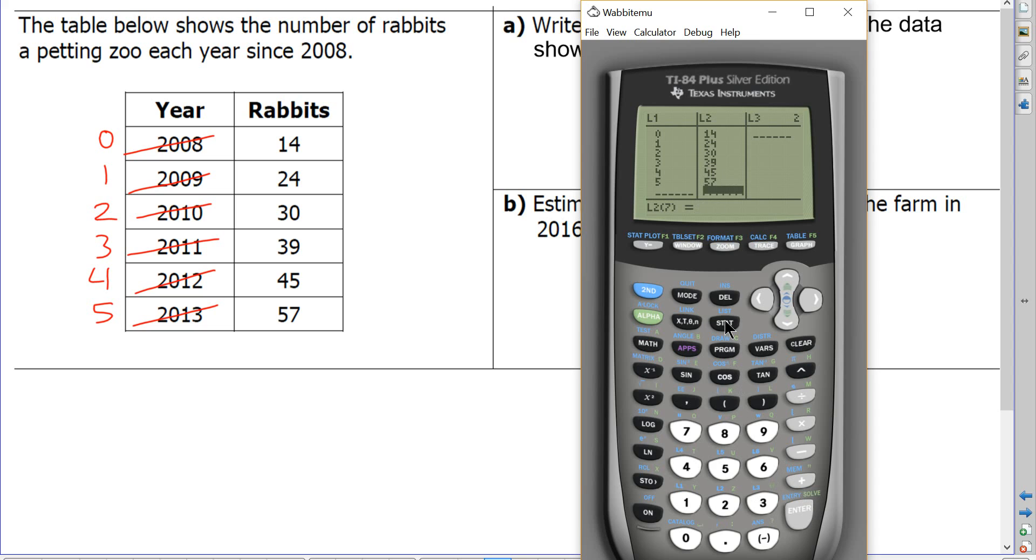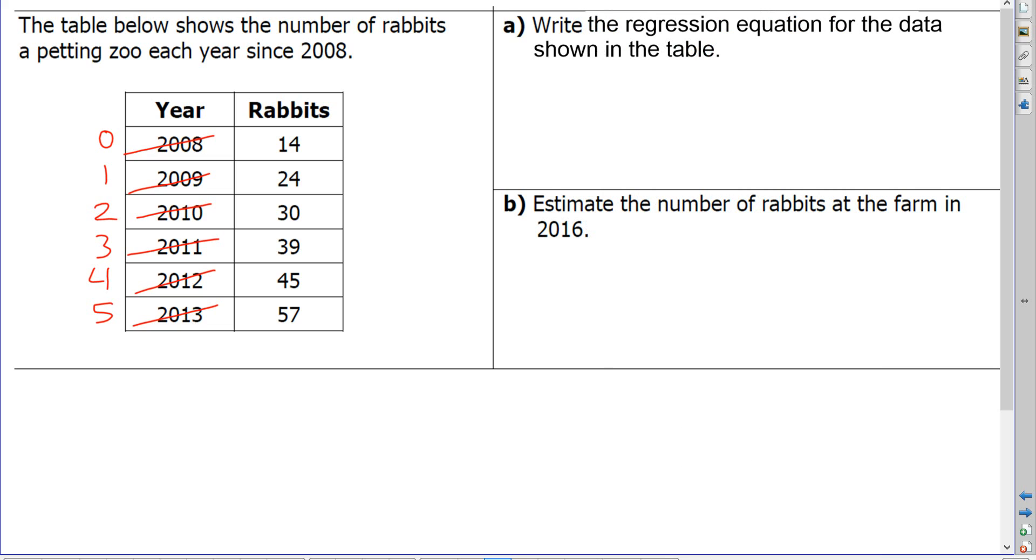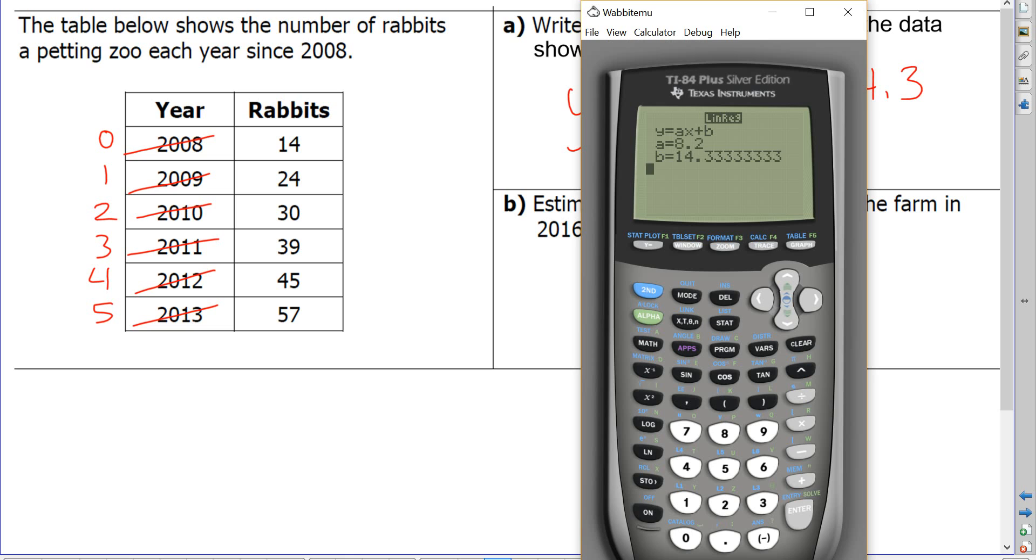Now I'm going to do the same method as before. So stat, arrow over to calc, number 4, linreg, and press enter five times. And there we have our equation. Y equals 8.2X plus 14.3. So that is my regression equation.